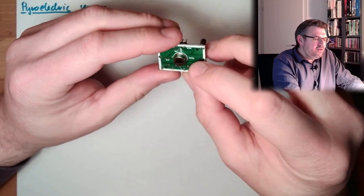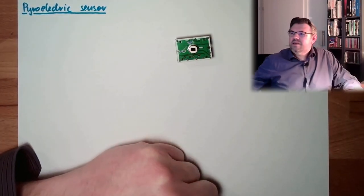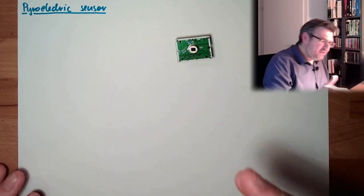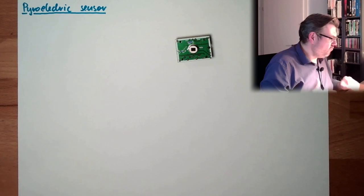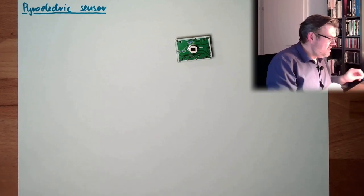This little device, it's a semiconductor device. This little device is influenced by infrared radiation. So this thing is called a PIR sensor.